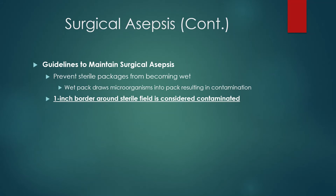Some guidelines to maintain surgical asepsis: prevent sterile packages from becoming wet. For example, if you spill betadine or sodium chloride on the sterile field — even though betadine kills microorganisms — a wet field allows microorganisms to wick up from underneath the package into the sterile field, rendering it no longer sterile.